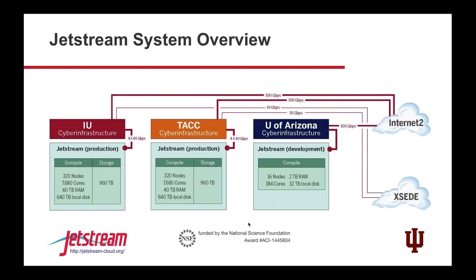Looking at what Jetstream is and how it's built: Jetstream consists of two production clouds, one at IU and one at Texas Austin, 320 nodes each. There's also a smaller cluster at U Arizona for testing and development — Arizona is our partner that develops Atmosphere. They have a small cluster there for testing Atmosphere development and for testing upgrades before we deploy them. We're connected by Internet2, with the XSEDEnet as a backup layer, and internally connected at 4x40 inside our machine rooms.